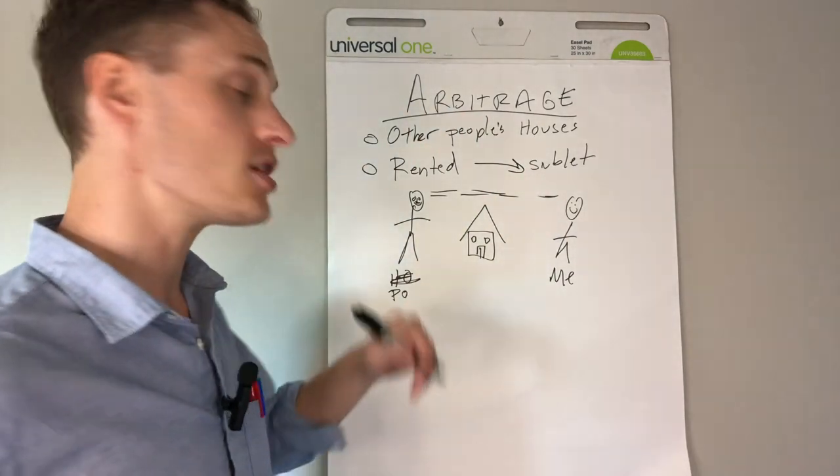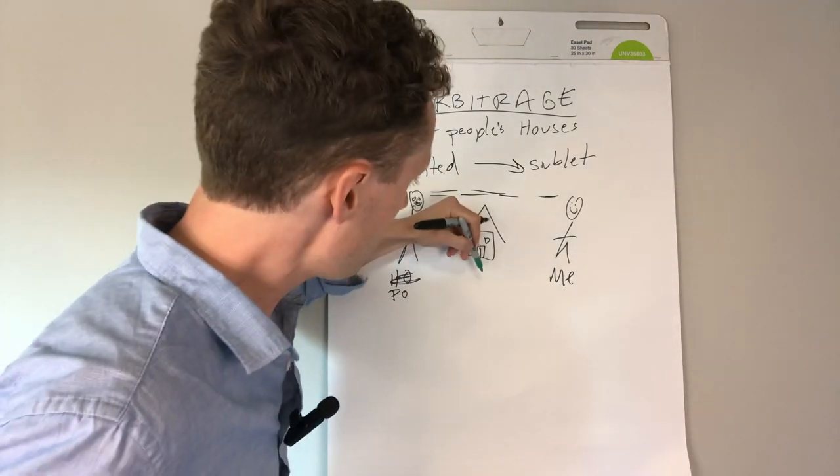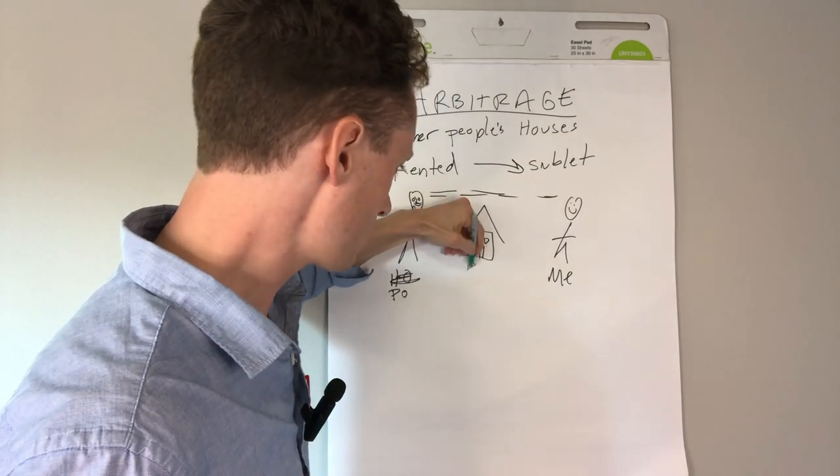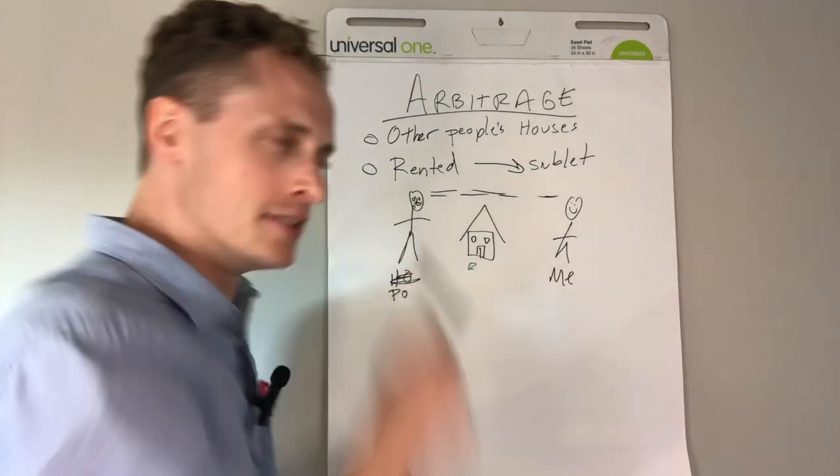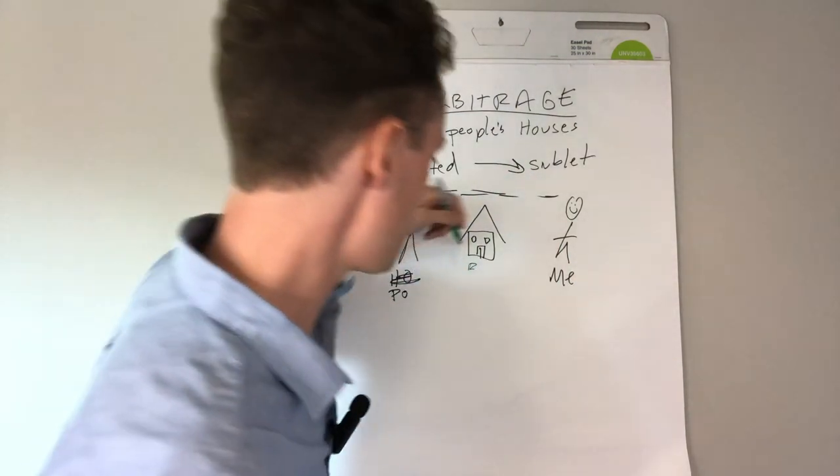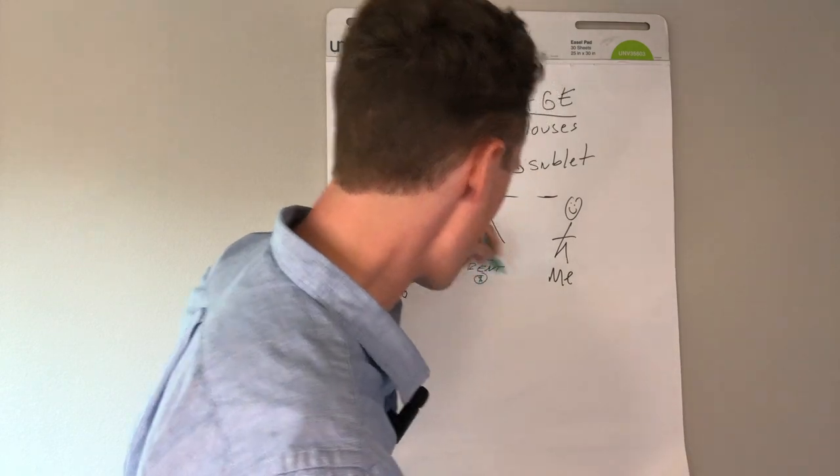So it ends up, he says, okay, great. You pay me rent every month and we're good. So I pay him. I'm not even going to edit that out. That just happened. Sneeze. Okay. So I pay him rent every month. All right.